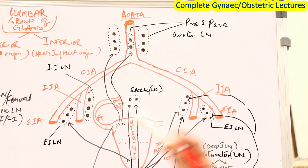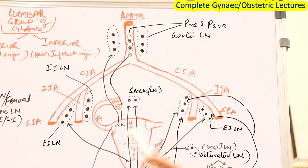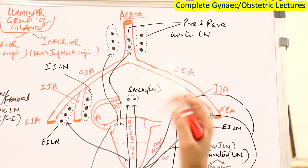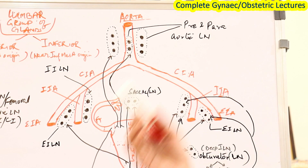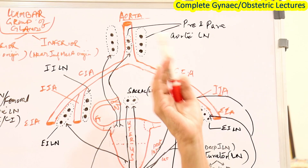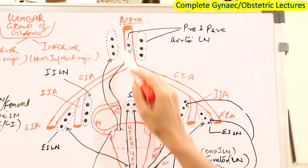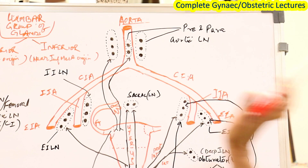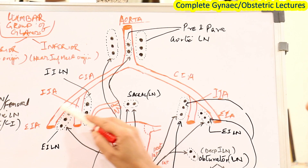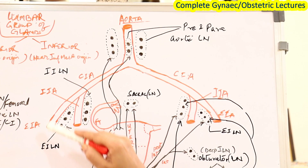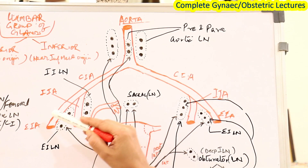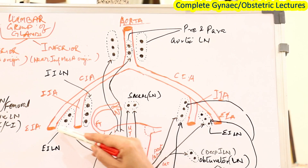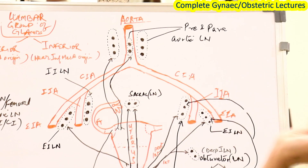We are just talking about genitalia, not other structures like intestines or mesentery. The aorta divides into right and left common iliac artery. The internal iliac and external iliac lymph nodes correspond to their respective arteries — these are the internal iliac lymph nodes and this is the external iliac lymph nodes.